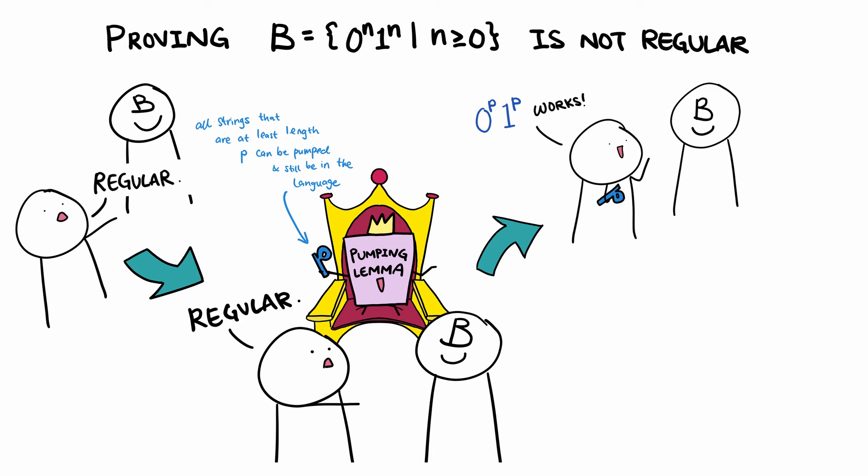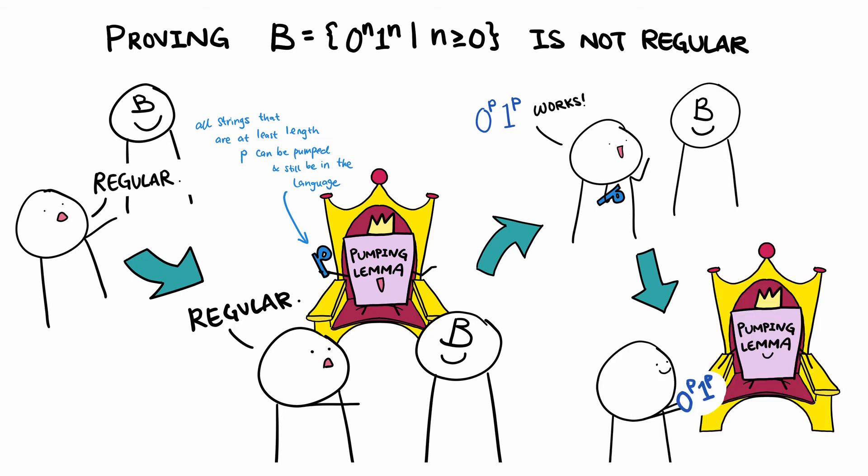We will use this string to contradict our initial assumption that the language satisfies the pumping lemma. And since we had claimed that the language is regular, according to the pumping lemma, the string can be split into three different components: the part before pumping, the part being pumped, and the part after pumping.